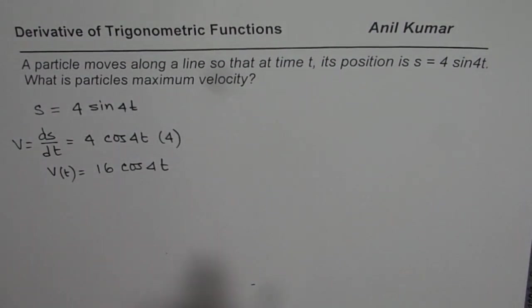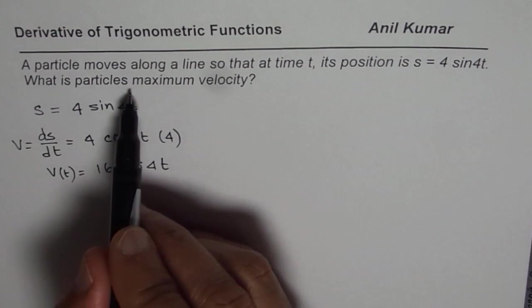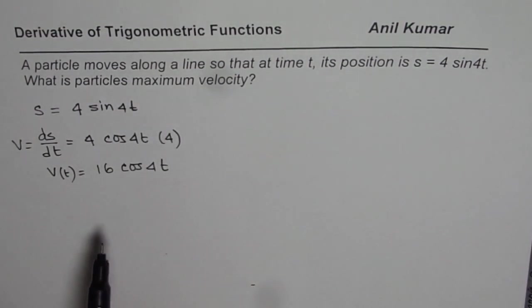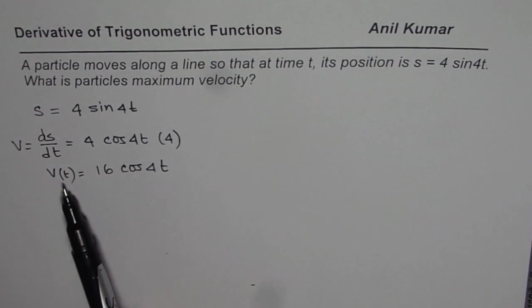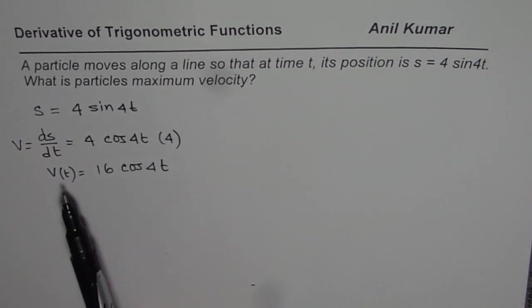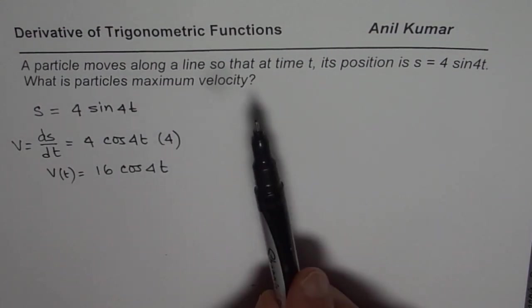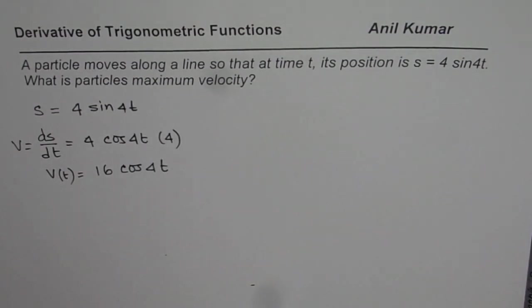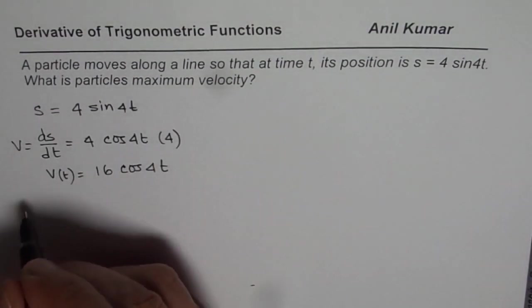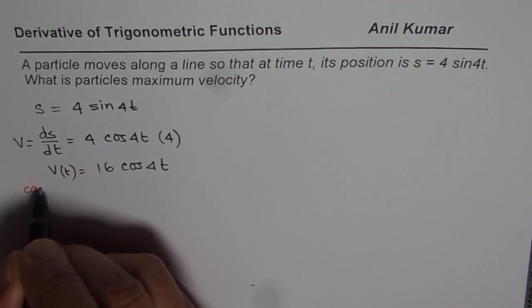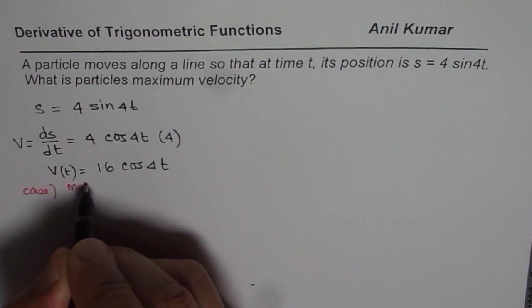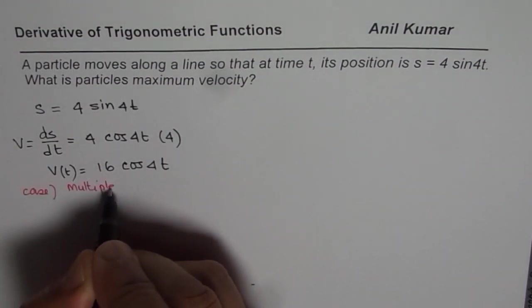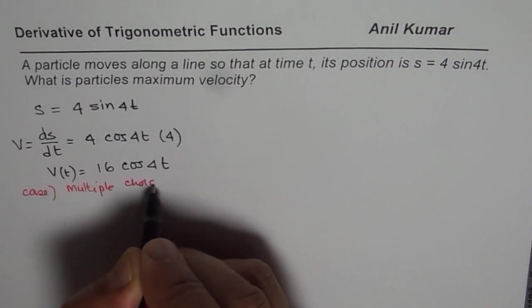Now the question is, what is the particle's maximum velocity? To find maximum velocity, we need to find derivative of this function and then the critical points. Now in case you have this question for multiple choice, let me understand what should be your answer. This is what I want to discuss with you.